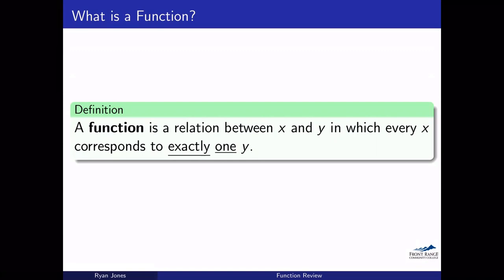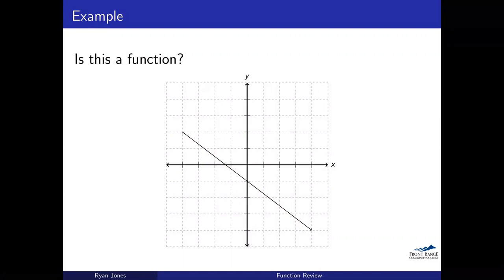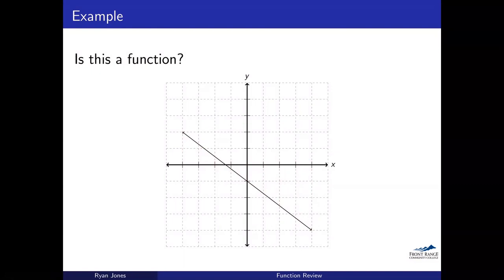Let's look at this line. We probably know off the top of our heads that lines are functions, but using the definition: every x coordinate I could come up with — does each correspond to just one y value? It looks like every x is associated with exactly one y. That's actually what makes it a line. So yes, this is a function.